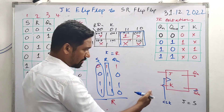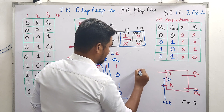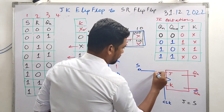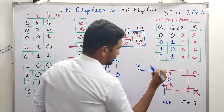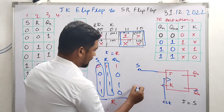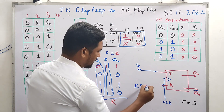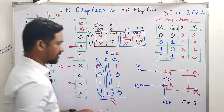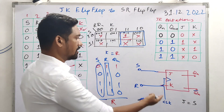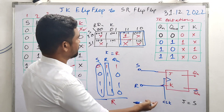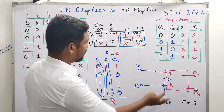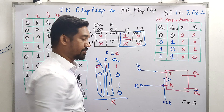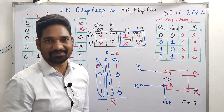From the K-map analysis, K = R. So the final result is straightforward: the S input directly gives J, and the R input directly gives K. There is no combinational circuit needed - it's a direct connection. S input goes directly to J; R input goes directly to K. This completes the JK flip-flop to SR flip-flop conversion. Thanks for watching.